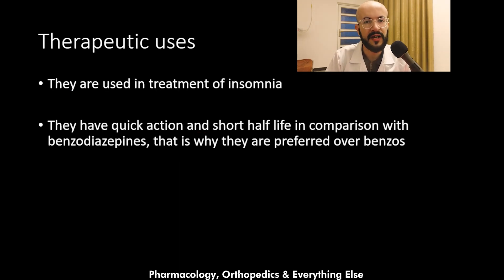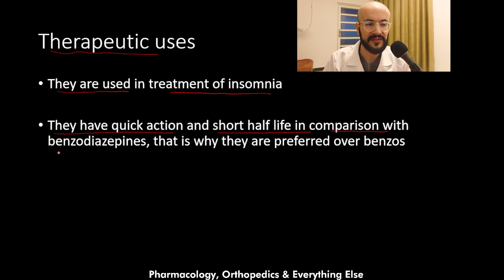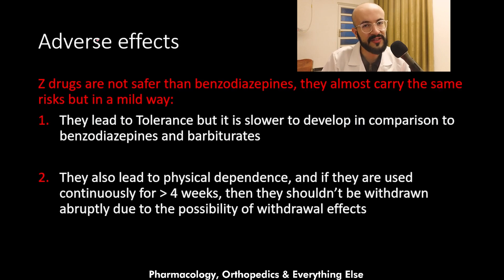Now let's talk about the therapeutic uses of the Z-drugs. They are mainly used in the treatment of insomnia. They have a quick onset of action and a short half-life, giving them a short duration of action in comparison with the benzodiazepines. That is why they are preferred over the benzodiazepines in the treatment of insomnia.